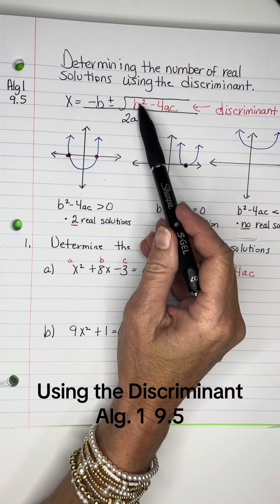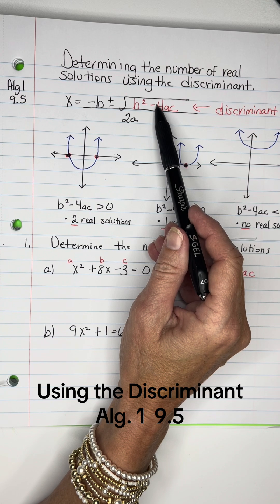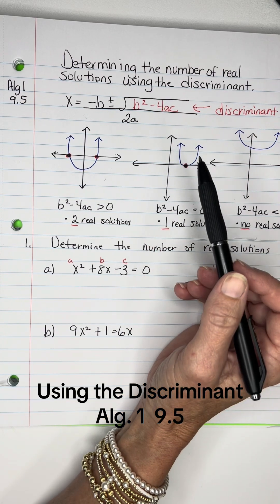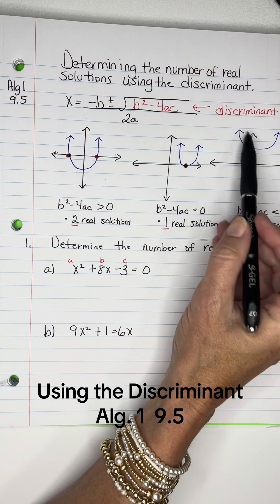And if you just do the algebra part, you can know how many solutions you're going to have on your parabola, because at most you can have two solutions, but you might only have one. You can have two solutions, one, or none.